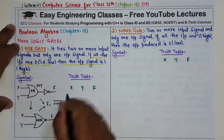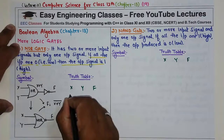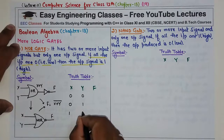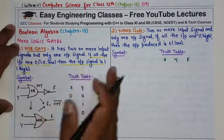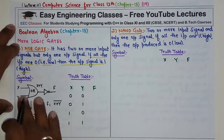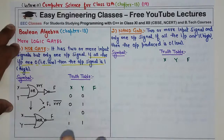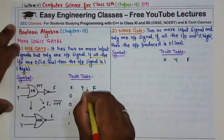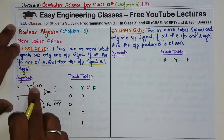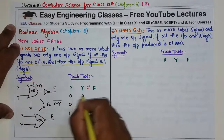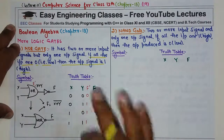Ab truth table dekhte hain. Do input hain x aur y, aur ek output f. Inputs: 00, 01, 10, 11. Agar sare input zero hain toh output one aayega. OR gate mein agar koi bhi ek input one hai toh output one hota hai — f dash mein: 00 case mein zero, baaki sab mein one. Phir f dash ko NOT gate se pass kiya — inverse ho jaayega: zero ki jagah one, baaki sab ki jagah zero.